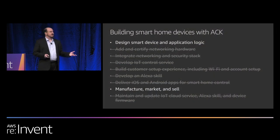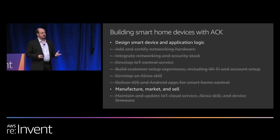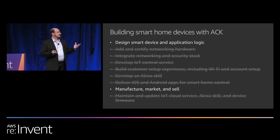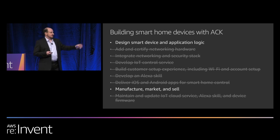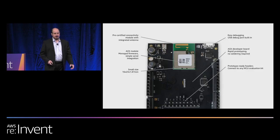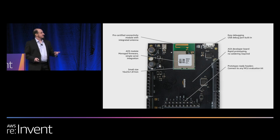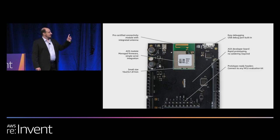Alexa Connect Kit is a combination of managed hardware, software, and services that aims to let manufacturers focus on just two things: design the smart device and its logic, and manufacture it. Here's the hardware component of ACK — the ACK Connectivity Module — which you can see mounted on top of our development kit.